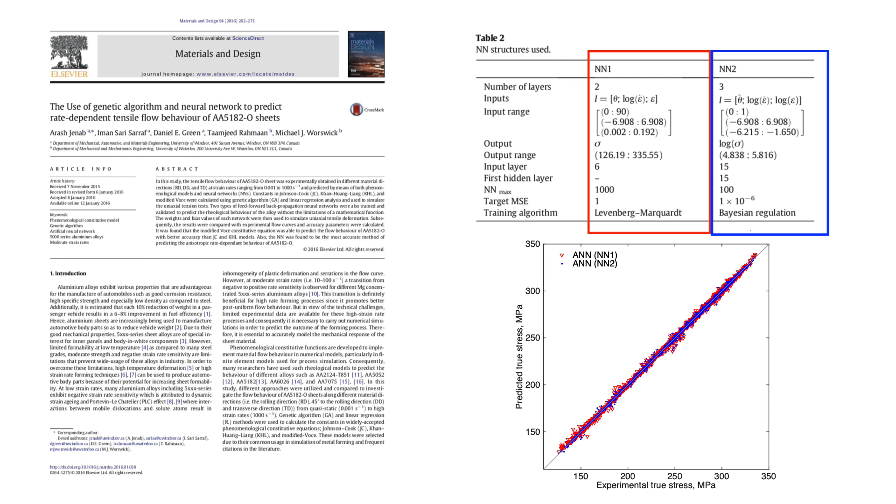I had different number of neurons in each network, and I trained them to different numbers, and also I used different training algorithms. Levenberg-Marquardt was for NN1, and Bayesian regulation was for number 2.